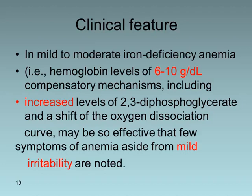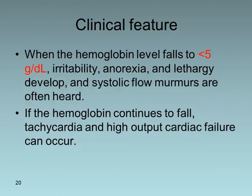In mild to moderate iron deficiency anemia (hemoglobin 6–10 g/dL), compensatory mechanisms — including increased 2,3-diphosphoglycerate and rightward shift of the oxygen dissociation curve — may be so effective that few symptoms are noticed apart from mild irritability. Once hemoglobin falls below 5 g/dL, irritability, anorexia, and lethargy appear, along with a systolic flow murmur. If hemoglobin continues to fall, tachycardia and high-output cardiac failure develop.